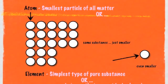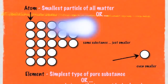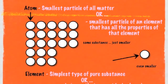Another way to define an atom is that it is the smallest particle of an element that has all the properties of that element — all the physical and chemical properties. That one small atom has all the same properties as the rest of the element. So an atom is the smallest particle of all matter, and it can also be defined as the smallest particle of an element that has all the properties of that element. That phrase 'that has all the properties of that element' is a key phrase.